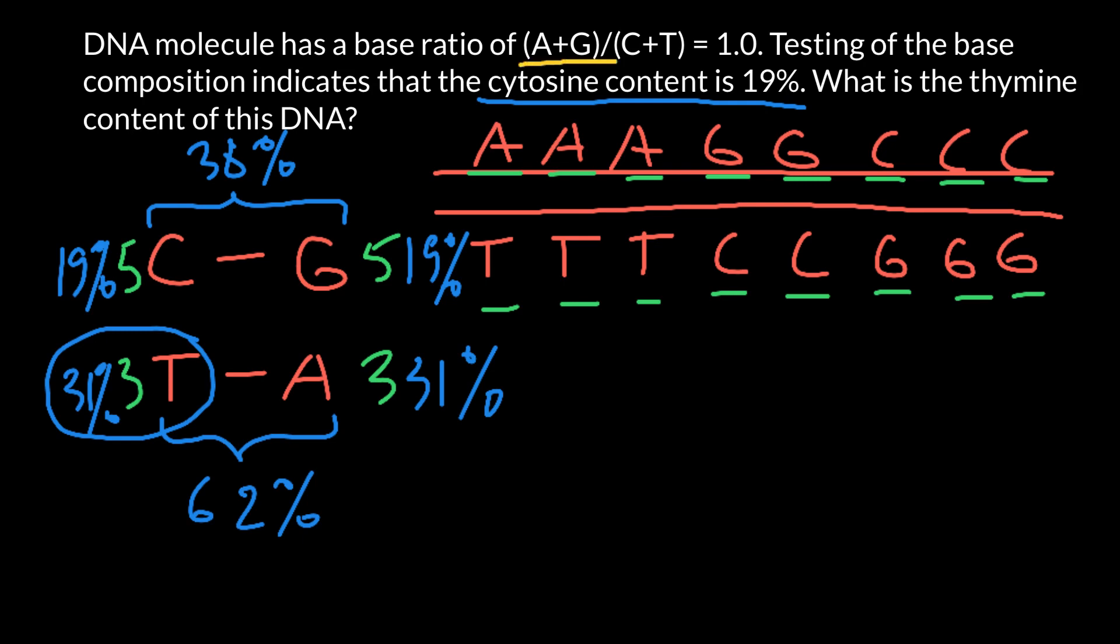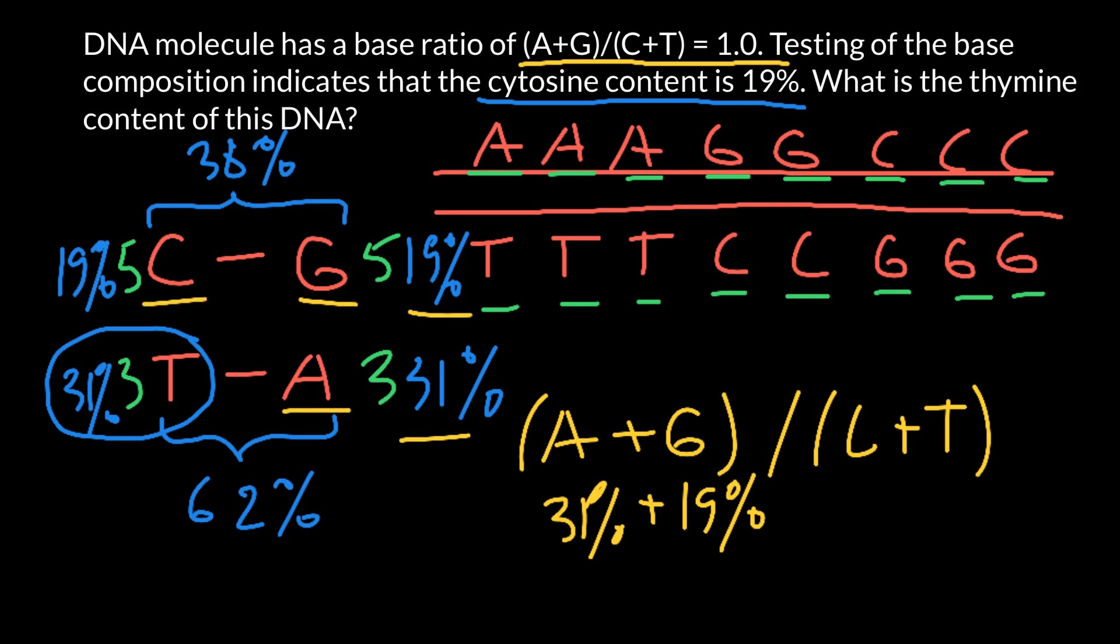Now let's check our formula here. Adenine plus guanine, so adenine plus guanine, and here is the numbers. Once again, adenine plus guanine, which is 31% plus 19%, divided by cytosine plus thymine. Cytosine is 19% as you see, and thymine is 31%. So 19% plus 31%. And this basically means that we have to divide 50 by 50, and we are going to get 1.